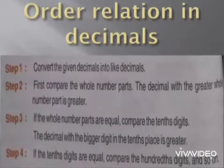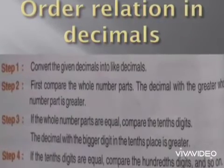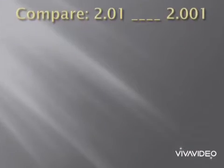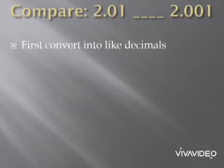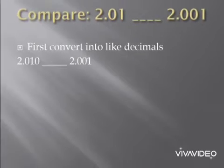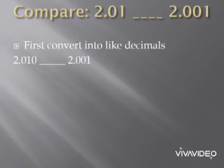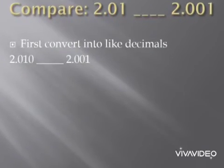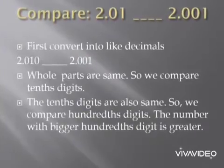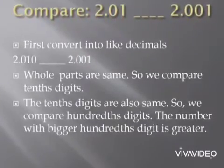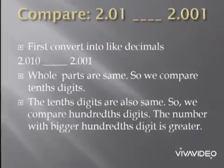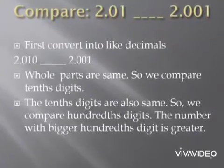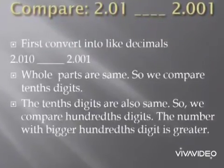Now let us compare two decimals, for example 2.01 and 2.001. First, convert them into like decimals. As you can see, the whole parts are equal — both are 2 — so we compare the tenths places. The tenths digits are also the same, so we compare the hundredths digits. The number with the bigger hundredths digit is greater.